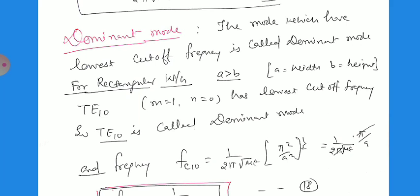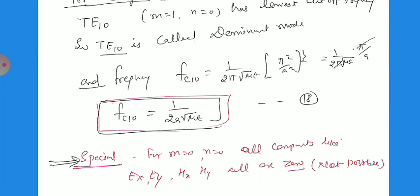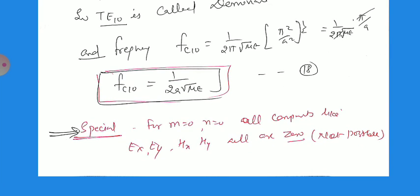The cutoff frequency for the TE10 mode is fc(10). Setting m equals 1 and n equals 0: fc(10) equals (1/(2π·root(mu·epsilon))) times (π/a)^(1/2)·power half, which simplifies to fc(10) equals 1/(2a·root(mu·epsilon)). This is the cutoff frequency for the dominant TE10 mode in the rectangular waveguide. If m equals 0 and n equals 0, all components are zero, so that is not a valid mode. The first valid mode is therefore TE10.